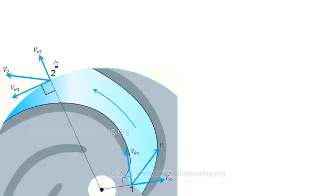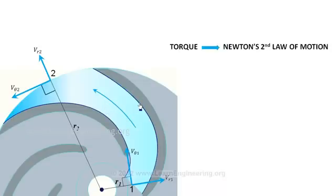In order to make the fluid flow, there should be an external torque acting on it. This torque can be derived from Newton's second law of motion, which acts as the fundamental equation of turbomachinery.